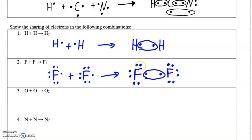So when you count electrons for this fluorine — one through eight — and then the other one, one through eight. The electrons in the bond count for both fluorines, both atoms involved in the bond, giving both of them an octet.